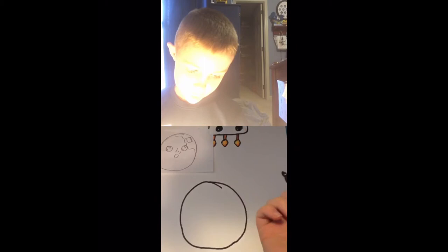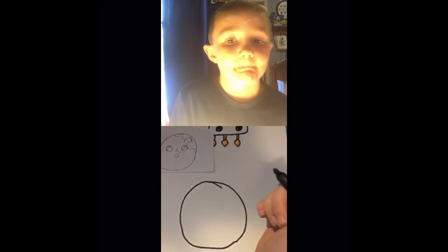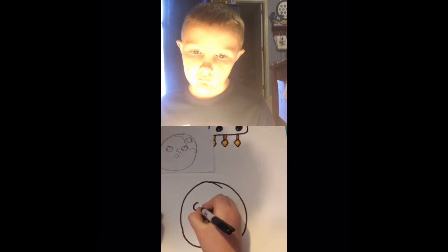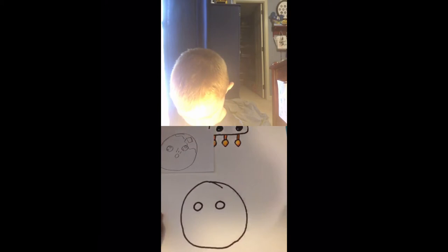Okay, now that we've done the big circle, now we are going to do the eyeballs. So what we are going to need to do is draw two little circles. Two little circles just like that.